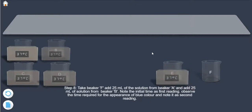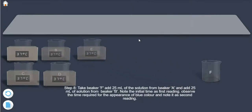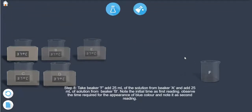Step 8: Take beaker F, add 25 ml of solution from beaker A and add 25 ml of solution from beaker B.